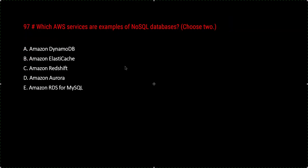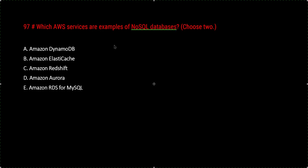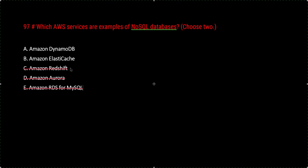Question 97: Which AWS services are examples of NoSQL databases? Aurora is a relational database, RDS stands for Relational Database Service, and Redshift is a data warehouse — columnar but still a data warehouse solution. That leaves us with the two NoSQL options: Amazon DynamoDB and Amazon DocumentDB.